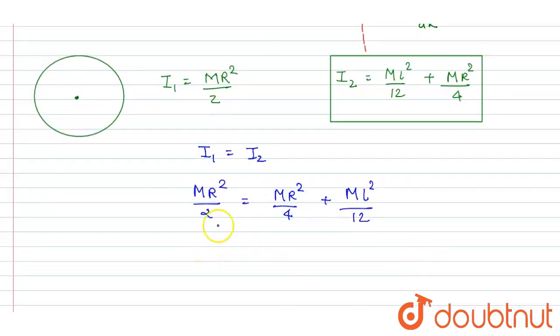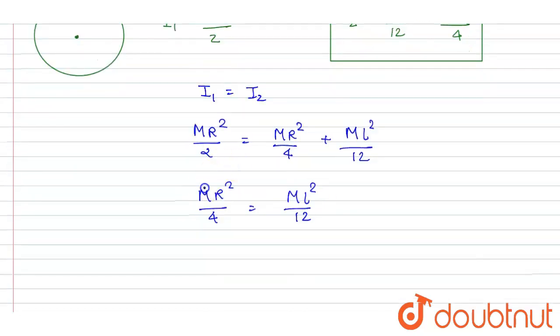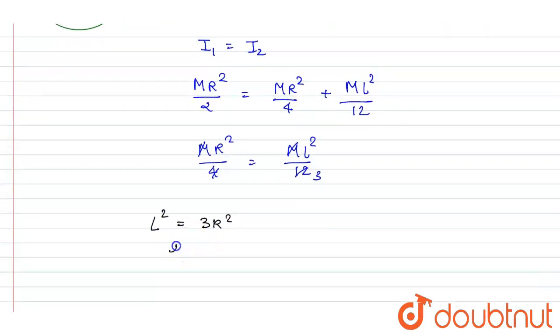MR²/4 = ML²/12. The M cancels out, and this also gets cancelled. Dividing, we get 3R² = L². Therefore, L = R√3.